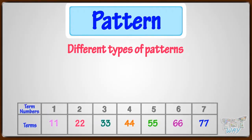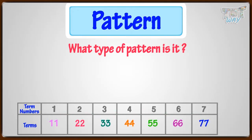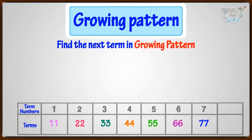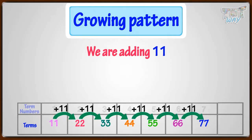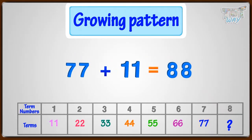Kids, here is a pattern. Can you see and tell what type of pattern it is? Here the numbers are growing or increasing with each successive term, so it's a growing pattern. What should be the next term in this growing pattern? With every successive term, we are adding 11 to the term. So to find out the next term, or the 8th term, we will add 11 to 77. 77 plus 11, we get 88.